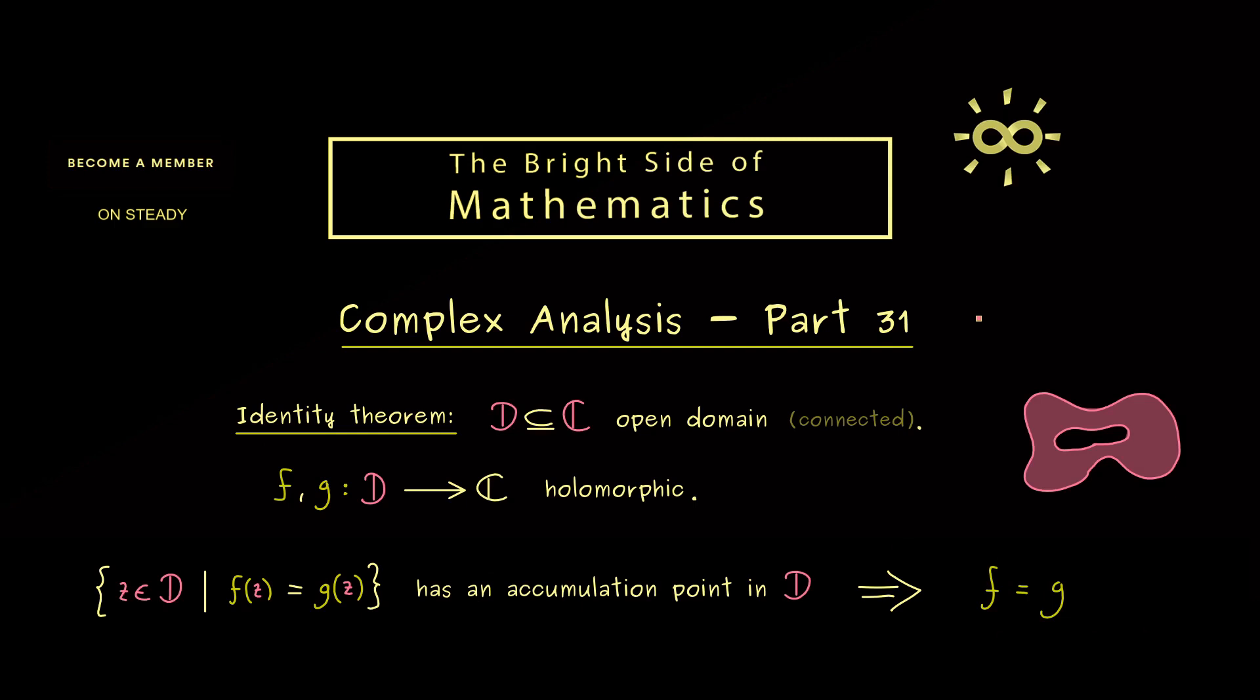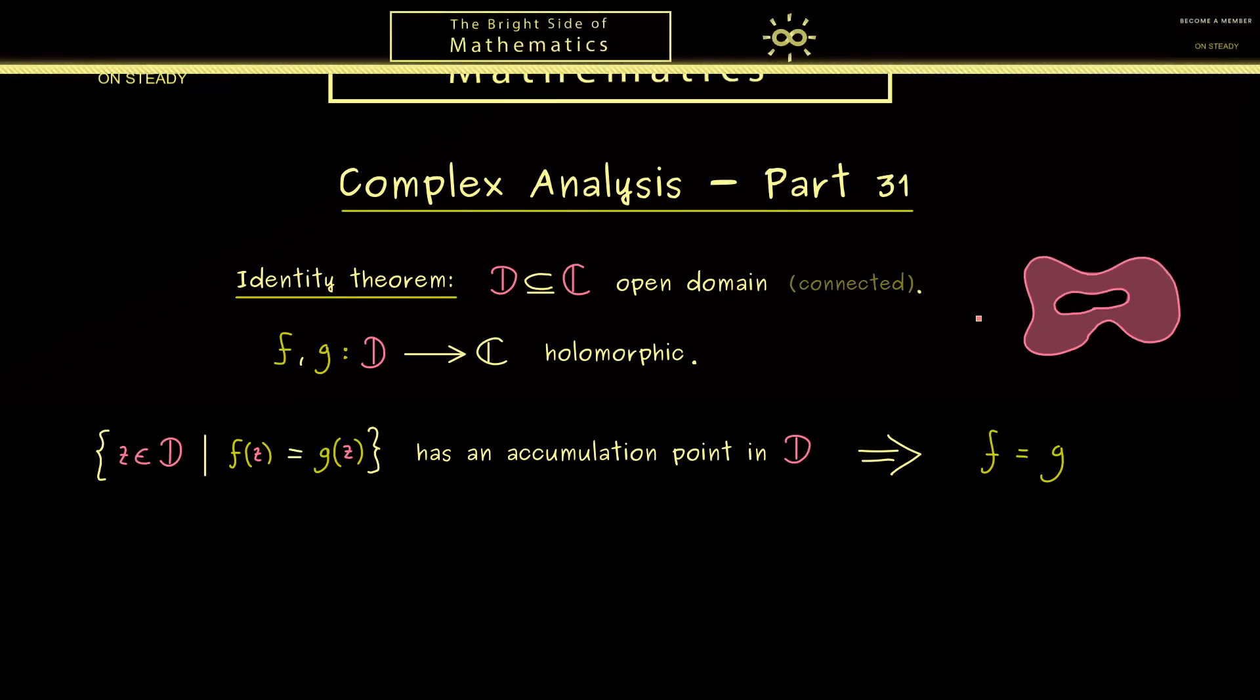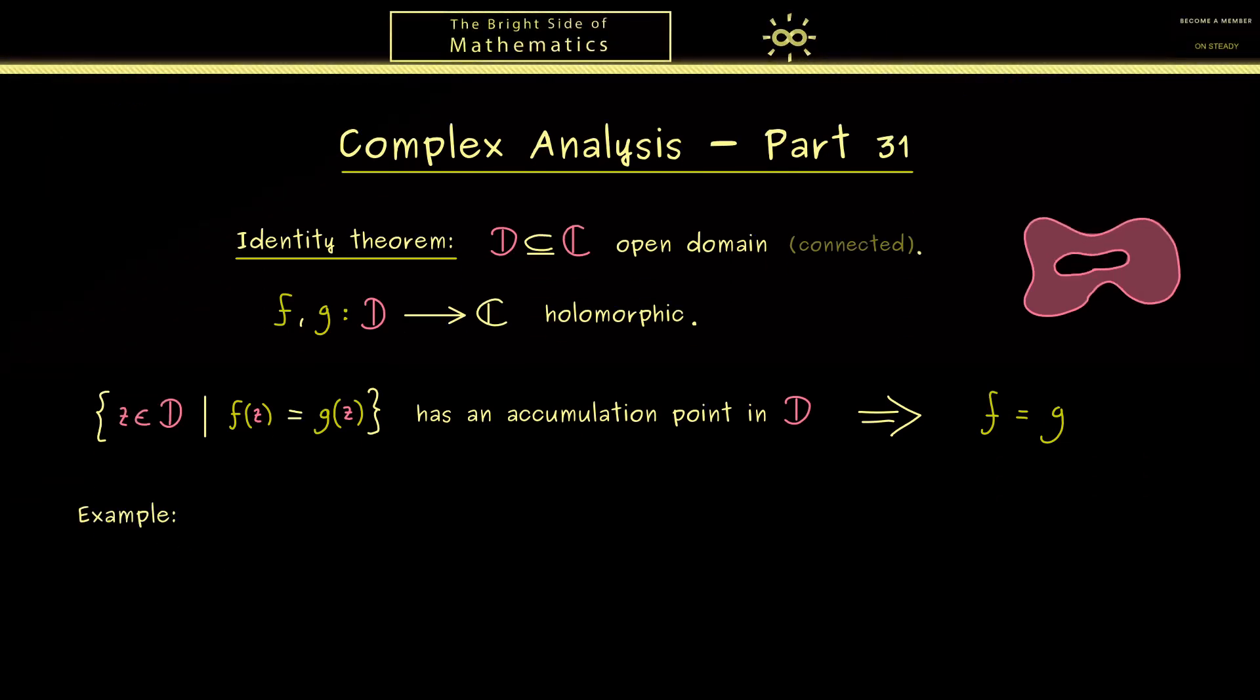With this, I would say we are ready to look at an example. This will be the cosine function. First I want to consider it as an ordinary real function, defined on the real number line with values in the reals as well. For example, we could define it as a power series.